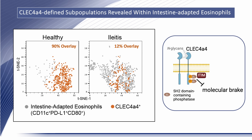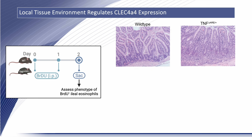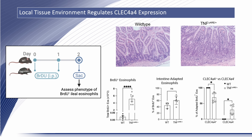To directly explore a role for the tissue microenvironment in shaping phenotypes in vivo, we used BrdU pulse labeling. Ilea of TNF-delta area mice were inflamed relative to wild-type littermates and elicited increased infiltration of BrdU-positive eosinophils. In both wild-type and ileitis mice, BrdU-positive eosinophils rapidly adopted the adaptation signature of CD11C, PD-L1, and CD80. However, while CLEC4A4 was uniformly induced on newly adapted eosinophils in wild-type mice, approximately 30% failed to express CLEC4A4 within the context of active ileitis, underscoring the important role of the local tissue environment.